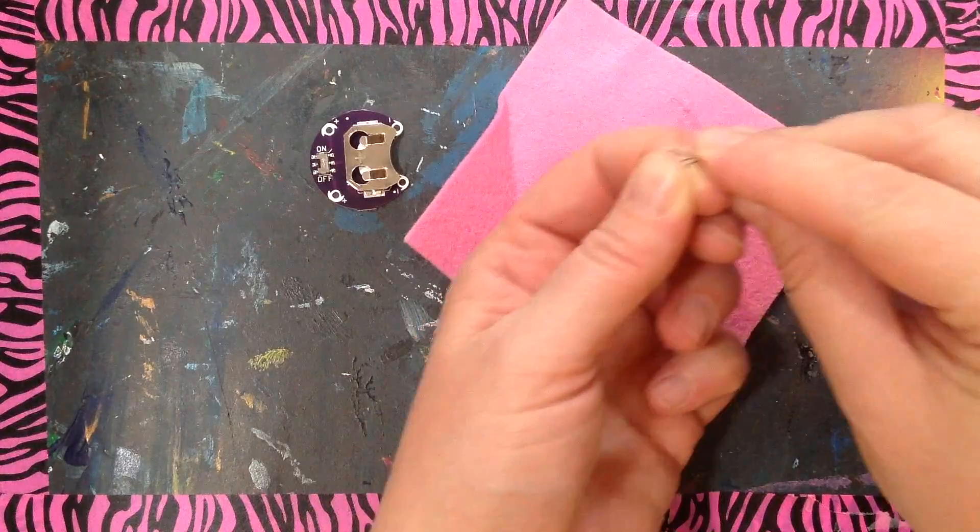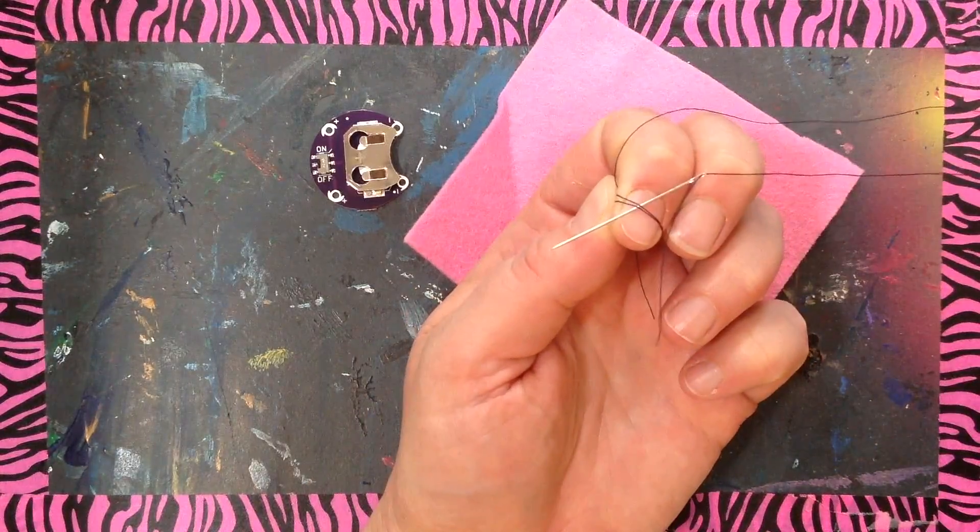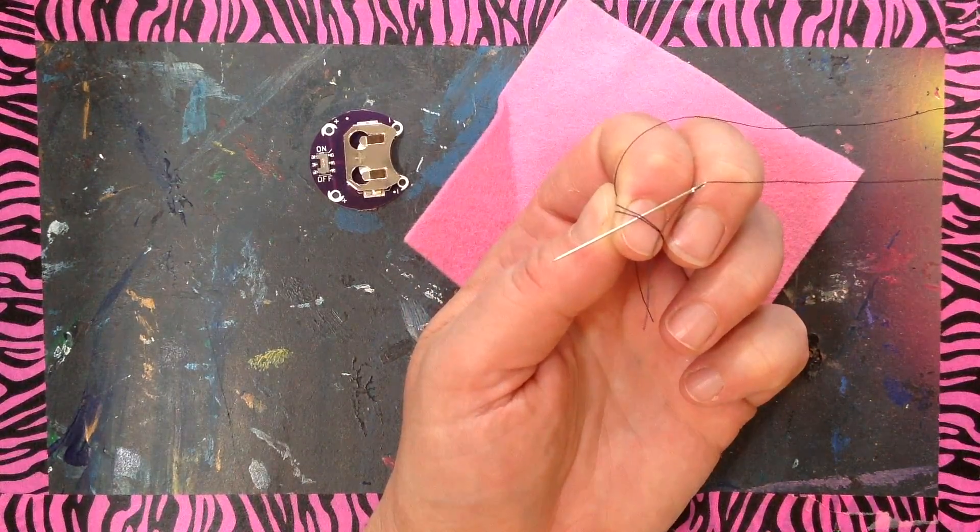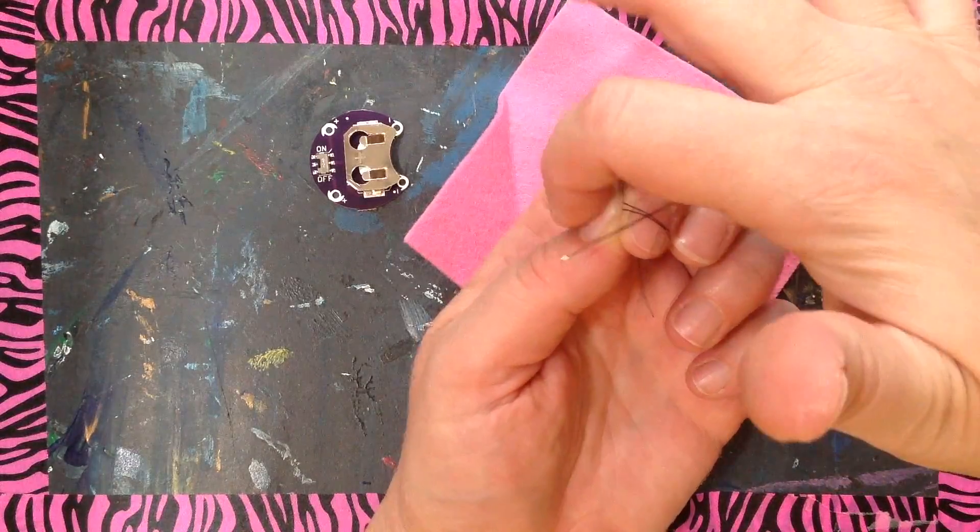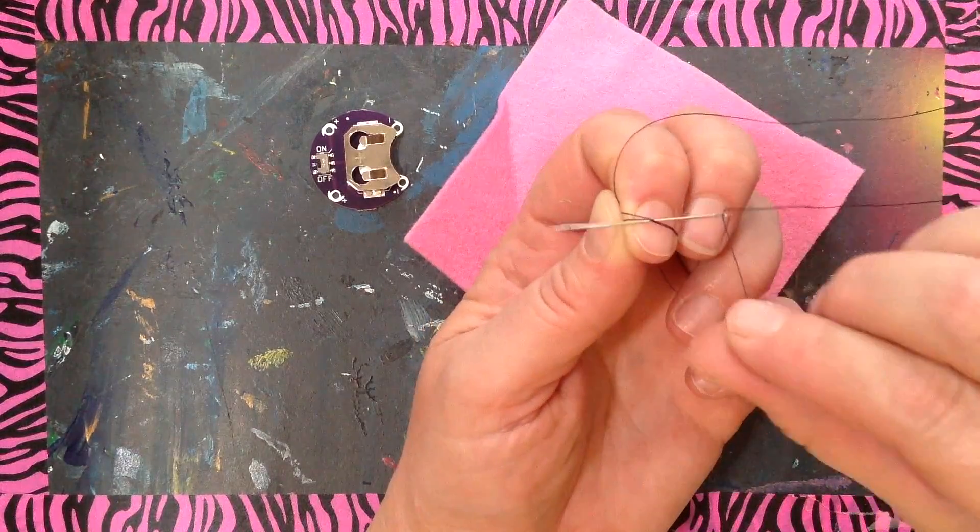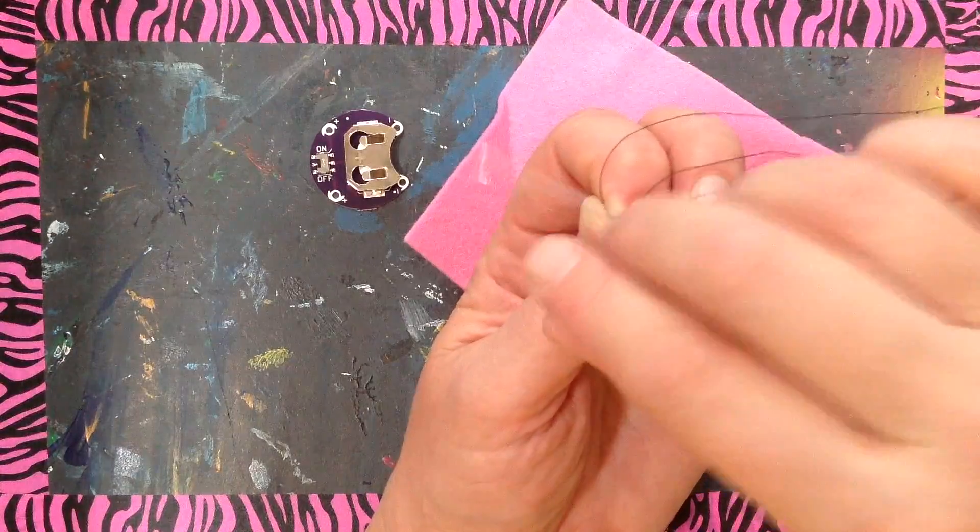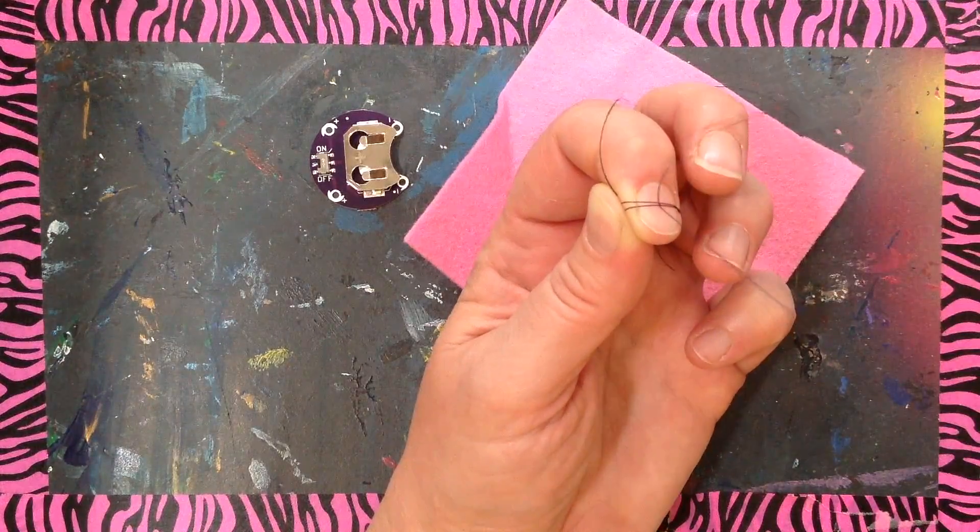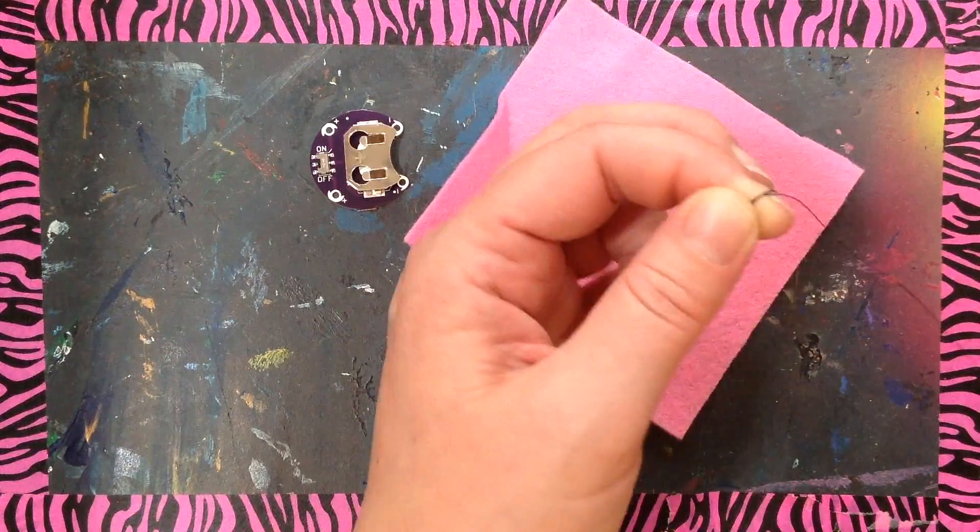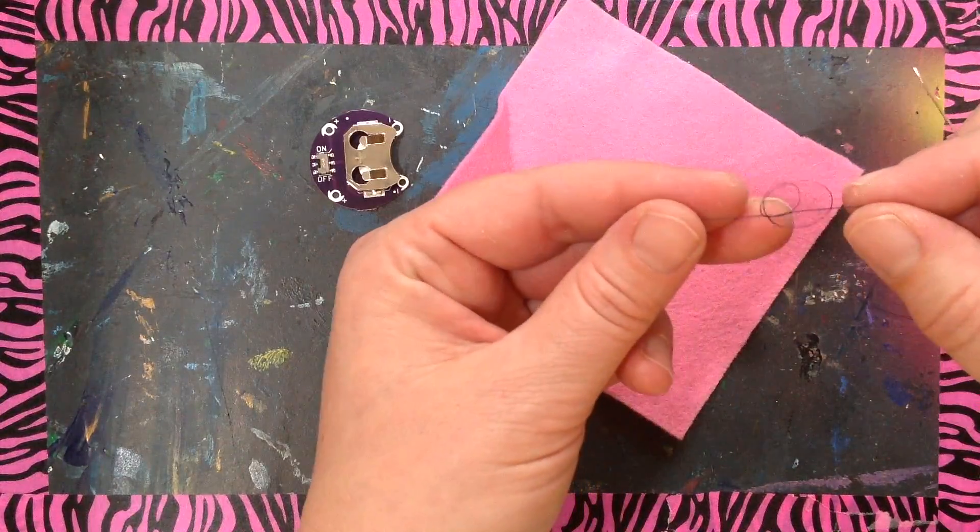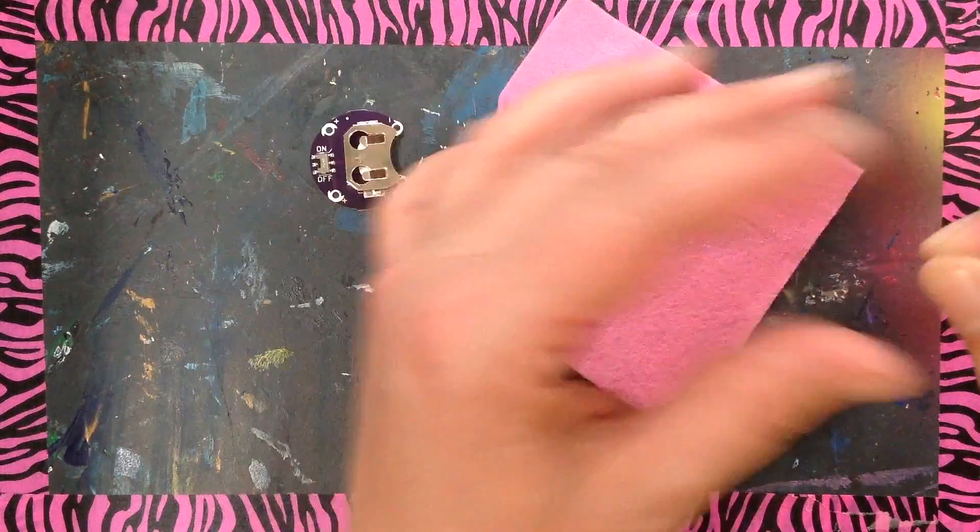I'm going to do a knot now. Notice that I wrapped the string around my finger a few times. I'm holding it here with my thumb, and I'm going to pull this needle through gently so that I don't get any tangles. And once I get down here, I get it off of my finger and now I've got a knot.